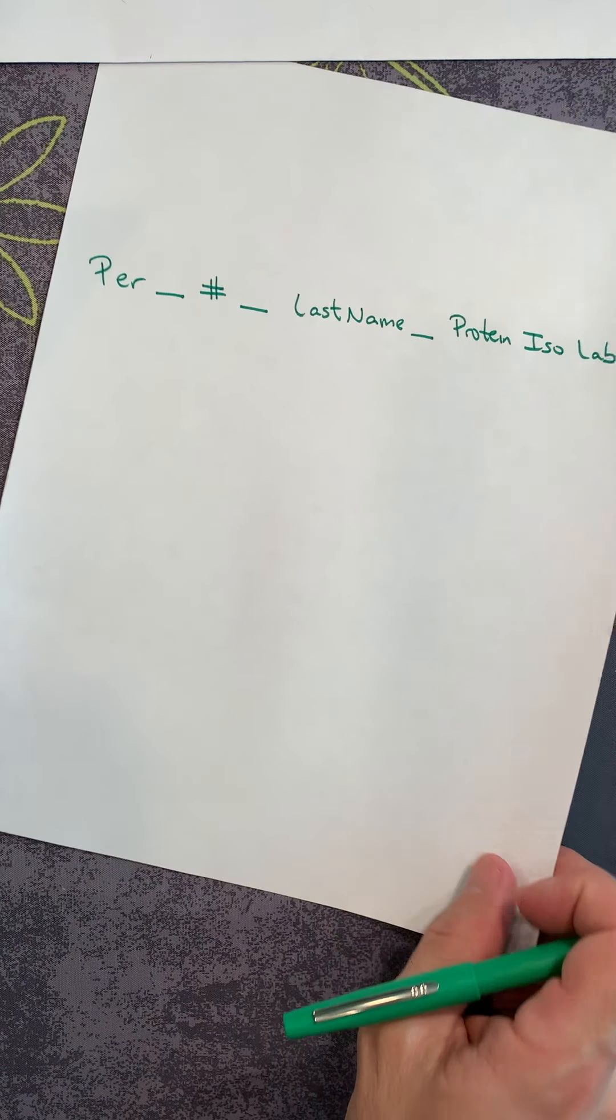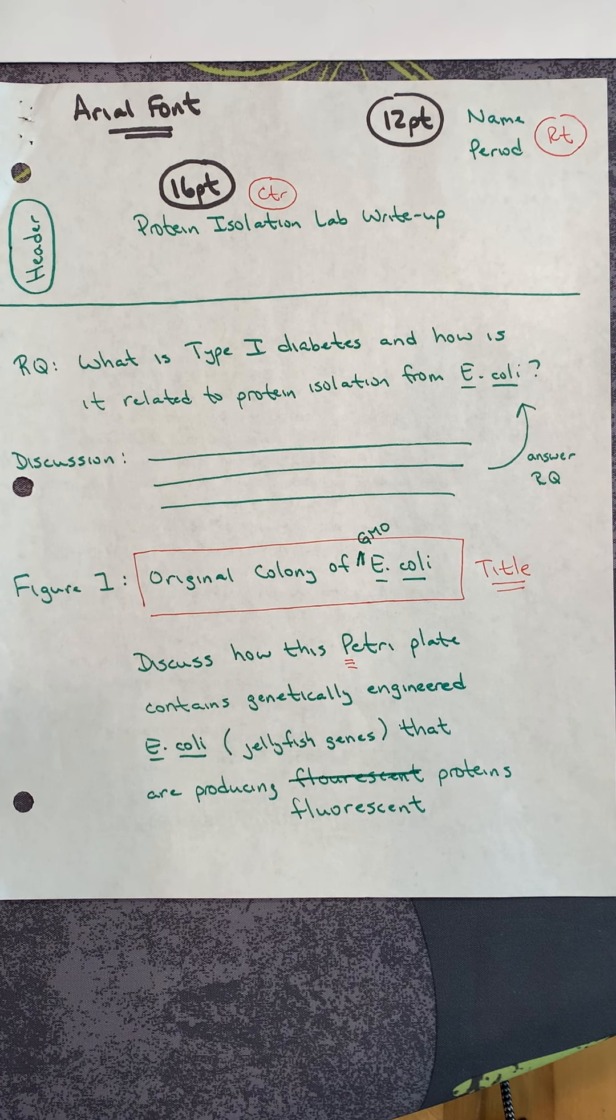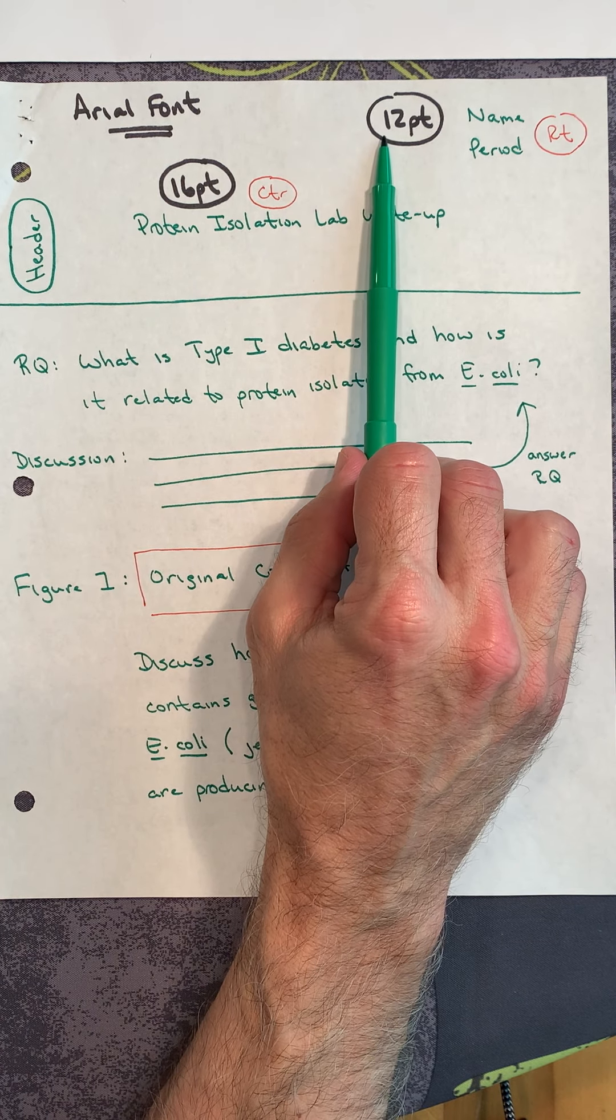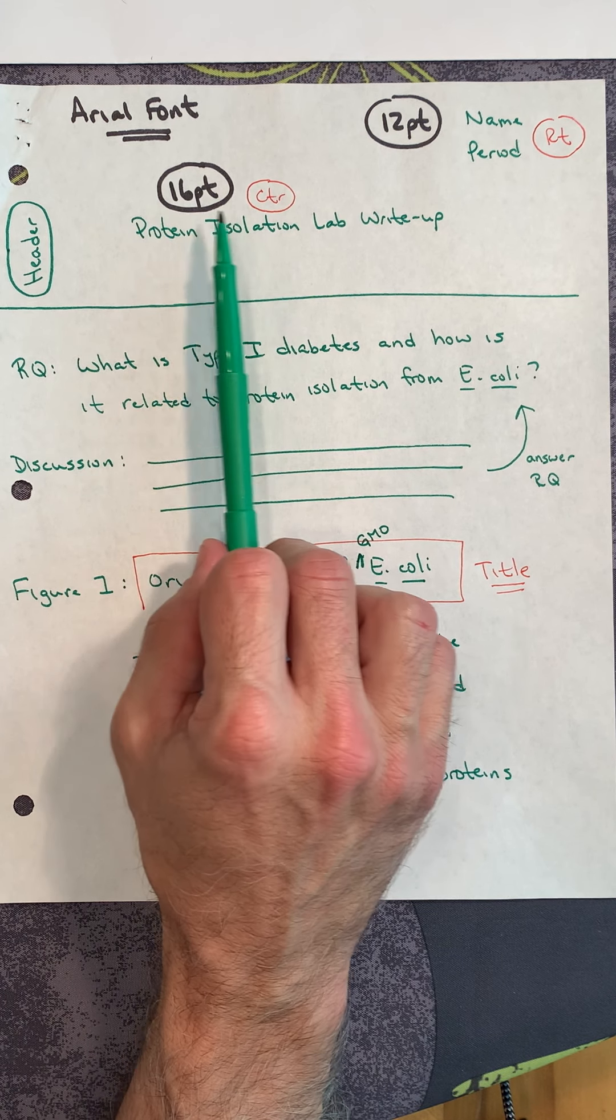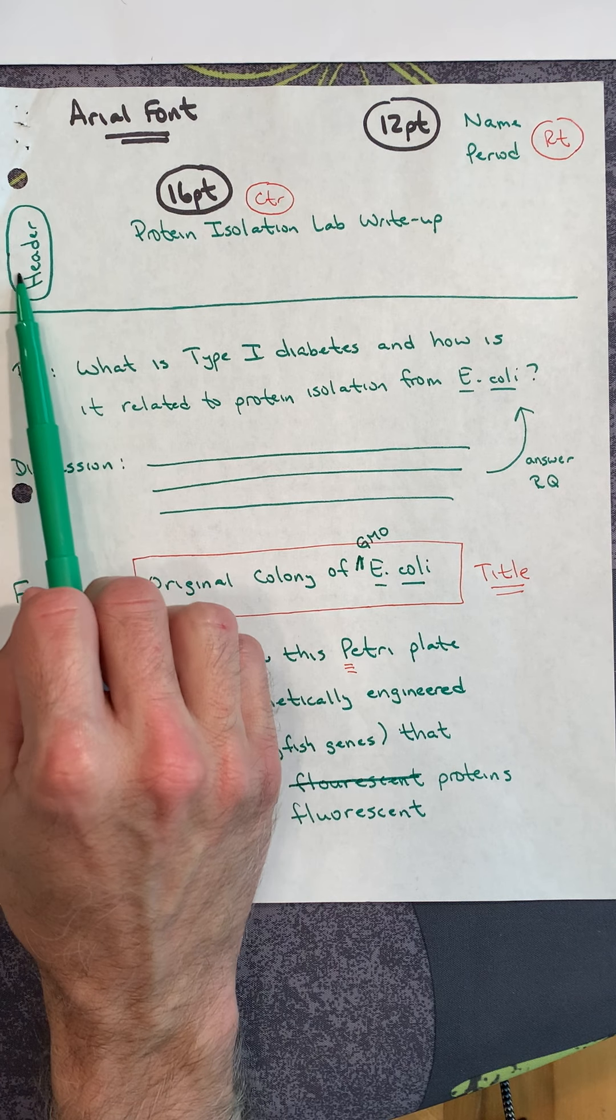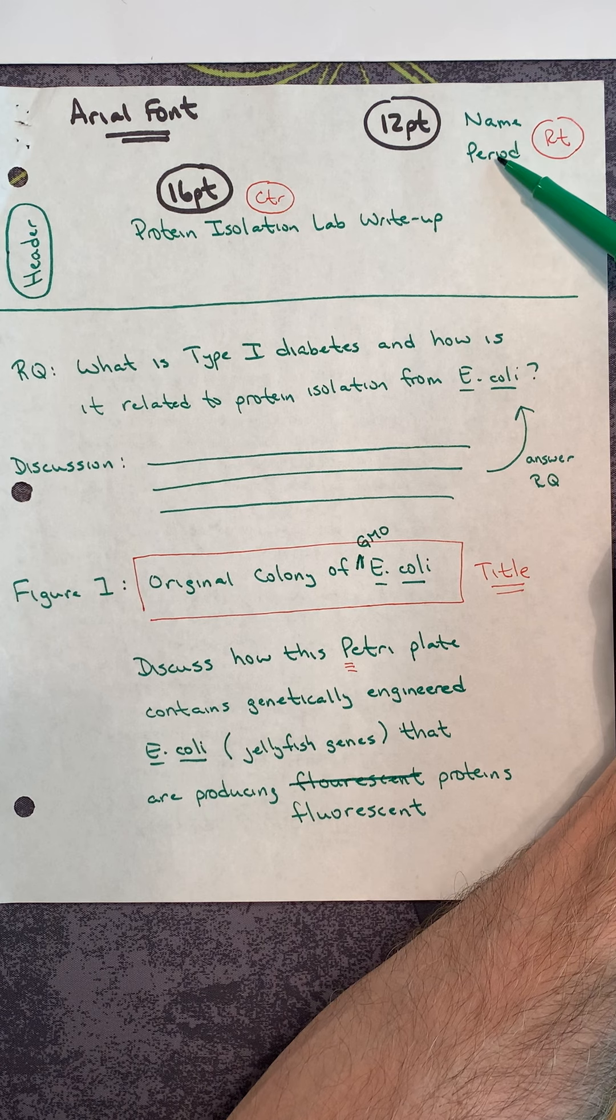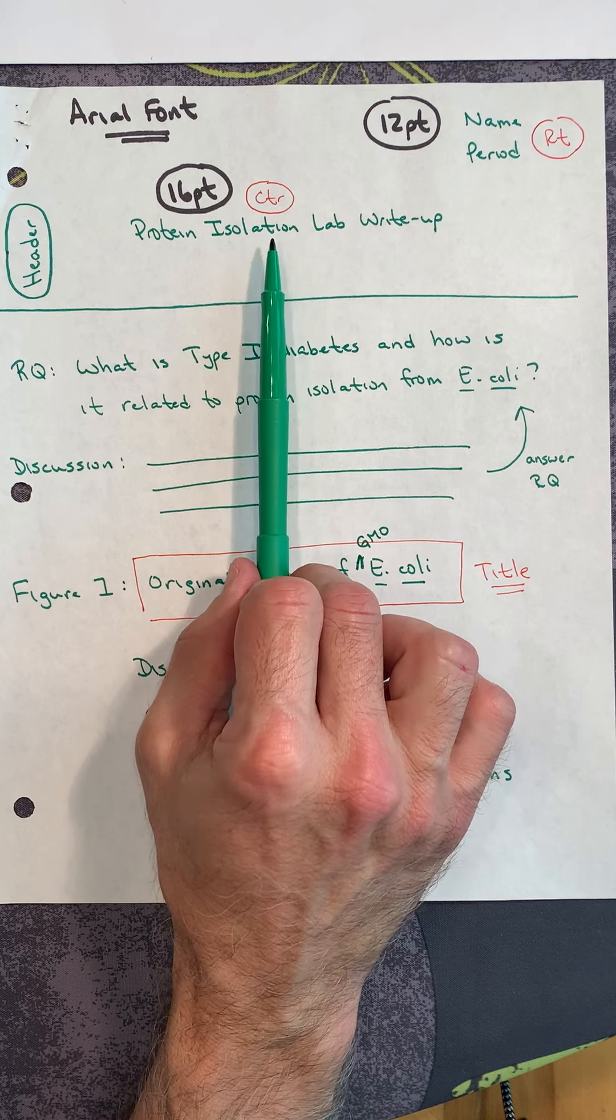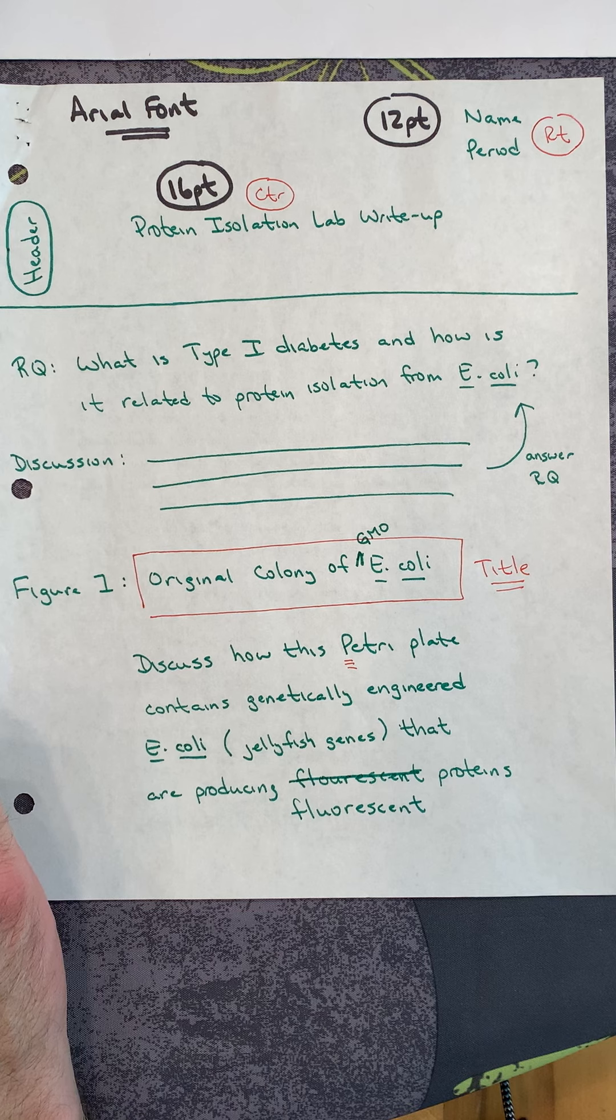So the notes that we took in class, these are the actual notes I pulled from my desk at school. You're typing everything in Arial font. Everything is in 12-point except for the title. Make the title 16-point and center it. Don't forget this is all inside of the header. Right-hand justify your name and your period.